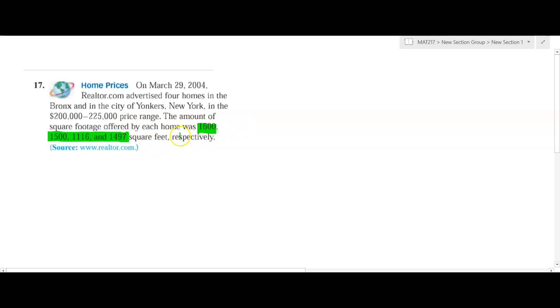And so we want to find out if these are representative of this particular region, what on average would be the typical square footage of a home. And so to find the sample mean, it's just going to be the sum of the values, plus 1,116, plus 1,497, all over 4.